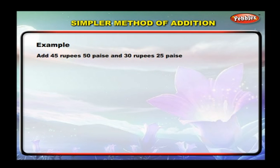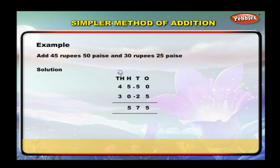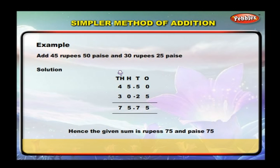Addition of money — simpler method. Example: add 45 rupees 50 paisa and 30 rupees 25 paisa. Arrange the amounts in columns and add: ones 0+5=5, tens 5+2=7, hundreds 5+0=5, thousands 4+3=7. We get 7575. Put the point in the same column to get Rs. 75.75, that is rupees 75 and paisa 75.